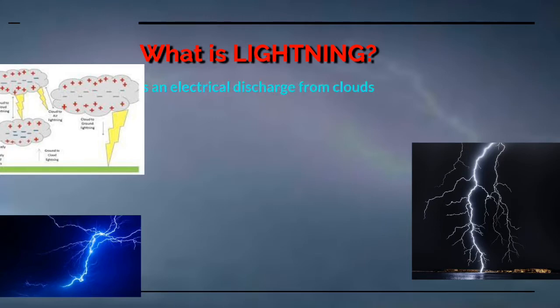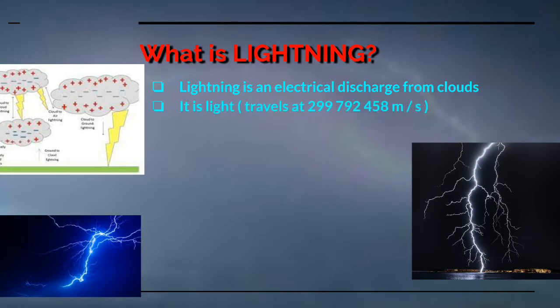What is lightning? Lightning is basically an electric discharge from the clouds. It is basically a form of light.